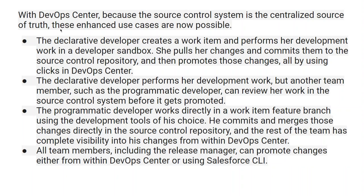With DevOps Center and source control as a centralized source of truth, enhanced use cases are now possible. The declarative developer creates a work item, performs her development work in a Salesforce sandbox, commits her changes to the source control repository, and promotes those changes — all using clicks in DevOps Center. A programmatic developer can review her work in the source control system before it gets promoted. The programmatic developer works directly in a work item feature branch using the tool of his choice, commits and merges changes into source control, and the entire team has complete visibility. Team members including the release manager can promote changes from within DevOps Center or using Salesforce CLI.